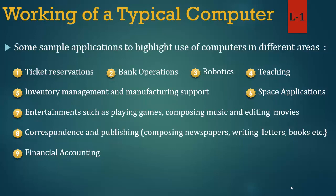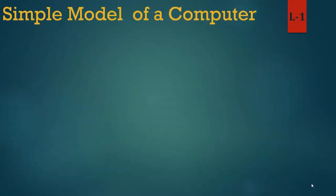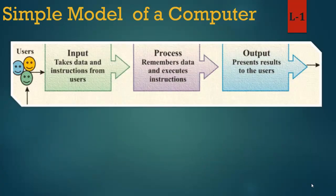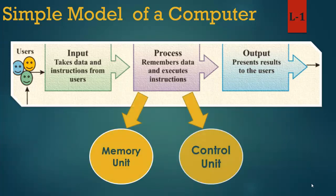Our new topic is the simple model of a computer. As we know about input, process and output, now we learn input in detail. We can see an image where process is divided into two sections: memory unit and control unit. Ab hum vistar se input seekhte hain. Prakriya do khandon mein vibhajit hai: memory unit aur control unit.